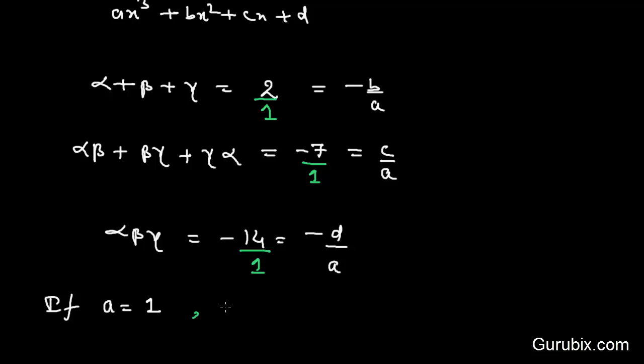then b would be equal to minus 2, c would be minus 7, and d would be positive 14.